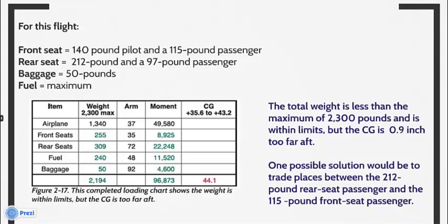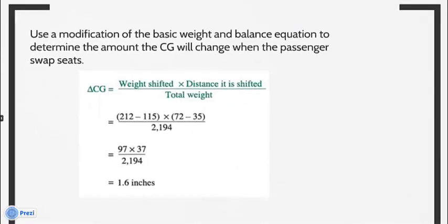One possible solution would be to trade places between the 212-pound rear seat passenger and the 115-pound front seat passenger. Use a modification of the basic weight and balance equation to determine the amount the CG will change when the passengers swap seats. The change in CG equals the weight shifted multiplied by the distance it is shifted, all over total weight.